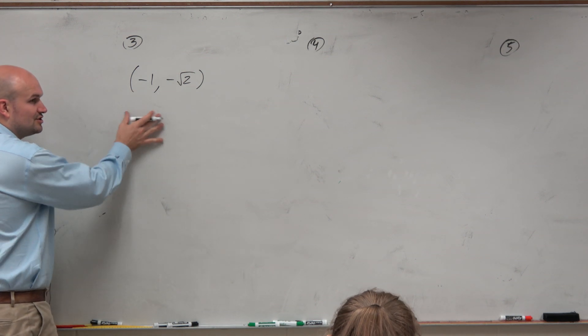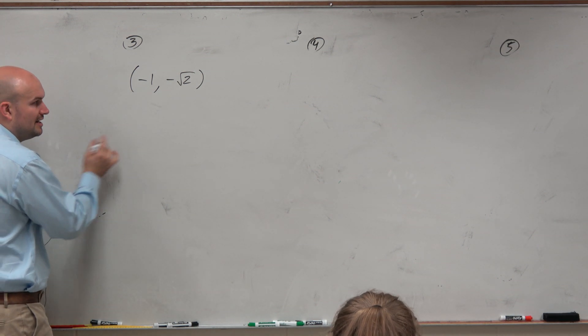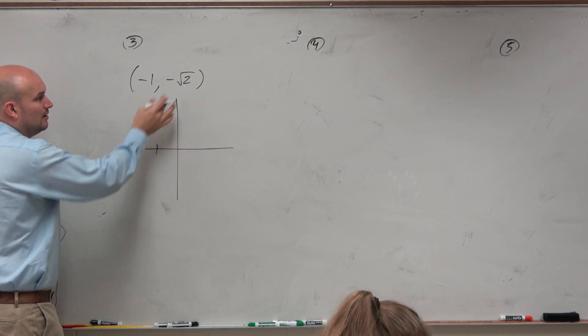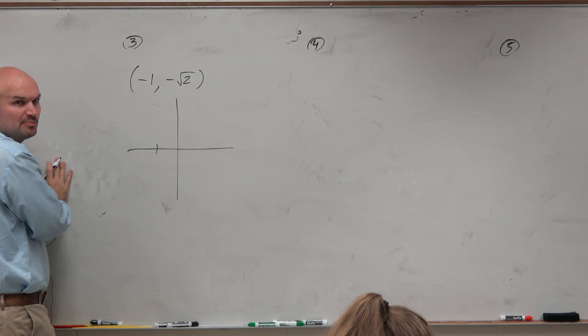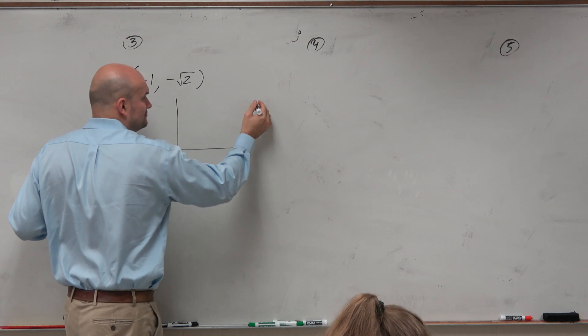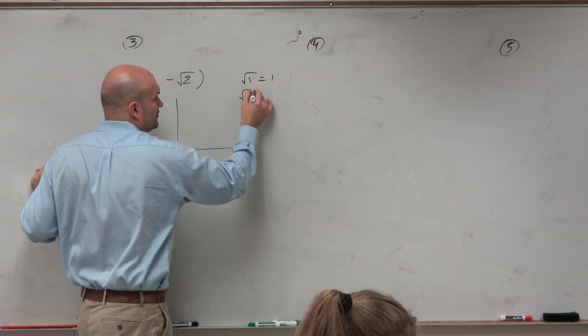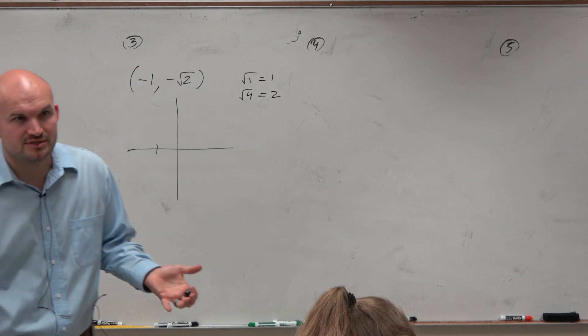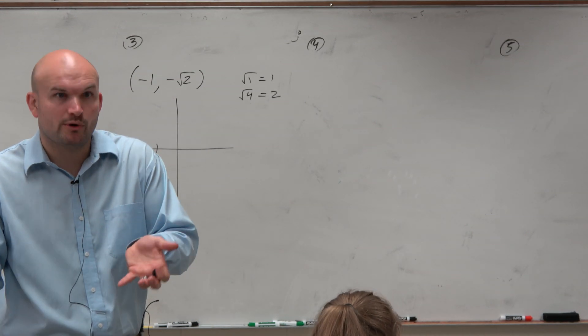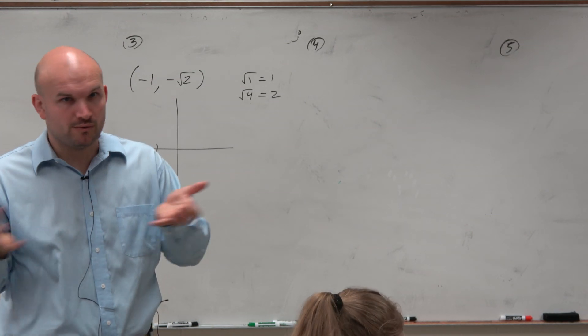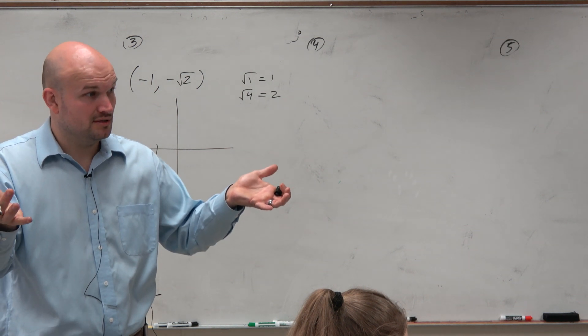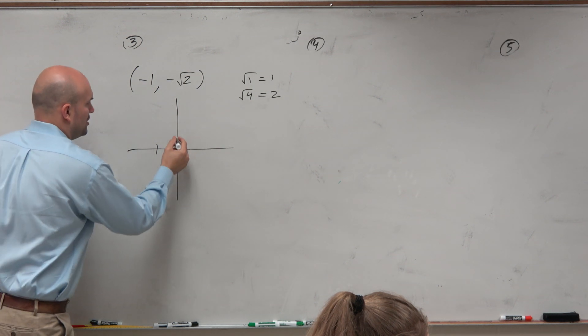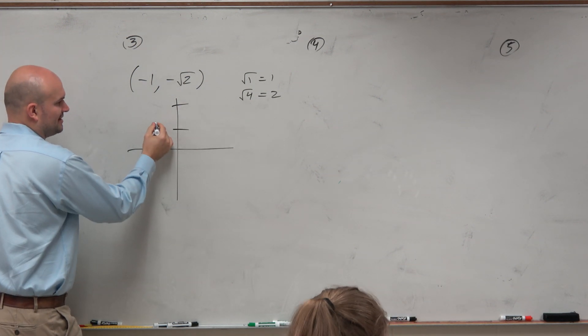The first thing I'd recommend is just sketch the point. We need to sketch the point. So we got negative 1. That's easy. Where is negative square root of 2? Well, we don't need to be perfect here. We know the square root of 1 is 1. We know the square root of 4 is 2. So can we just make an agreement now that the square root of 2 as well as the square root of 3 is somewhere in between 1 and 2? It's 1 in some decimal. Probably closer to 1 than it is to 2, because we have square root of 3 in there as well.